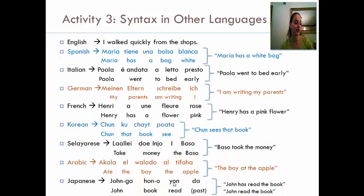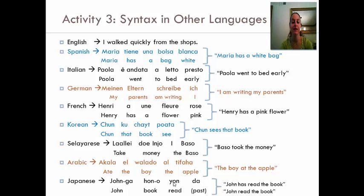Now I'm going to have you do Activity 3, which is to see if you can detect and describe the word order or syntax in each of these sentences from different languages. Remember that some languages are more flexible than others in terms of word order. Go through each statement in the different languages and identify if it's SVO, OVS, or VSO. Press pause, and once you're done, come back and we'll go over it together.